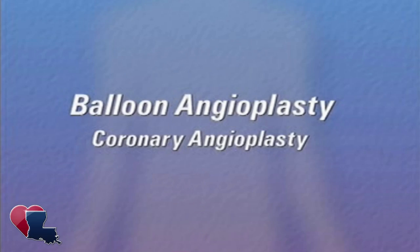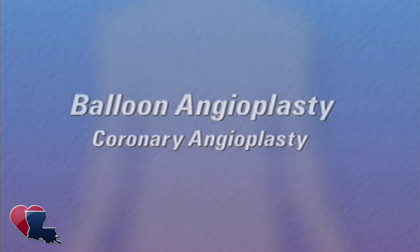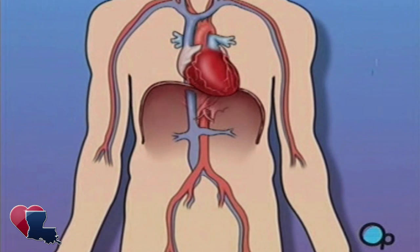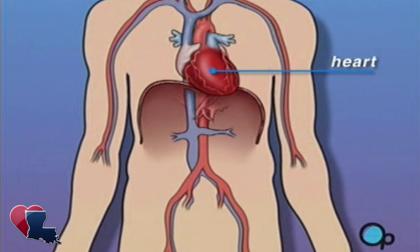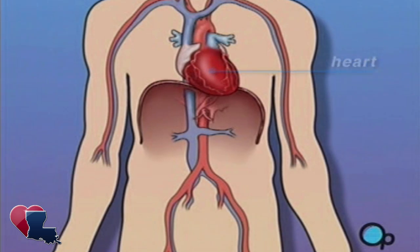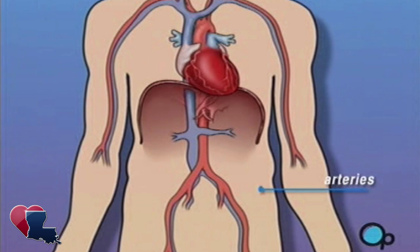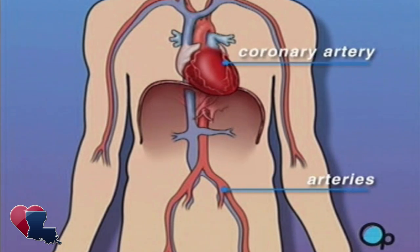Your doctor has recommended that you undergo a balloon angioplasty, but what does that actually mean? The heart is located in the center of the chest. Its job is to keep blood continually circulating throughout the body. The blood vessels that supply the body with oxygen-rich blood are called arteries. The arteries that supply blood to the heart muscle itself are called coronary arteries.